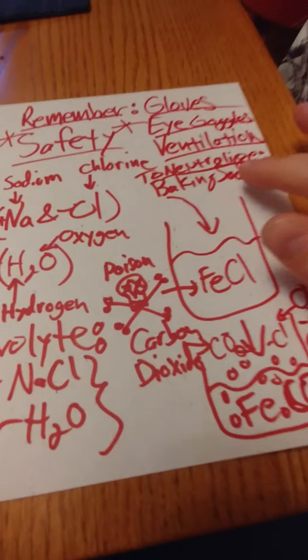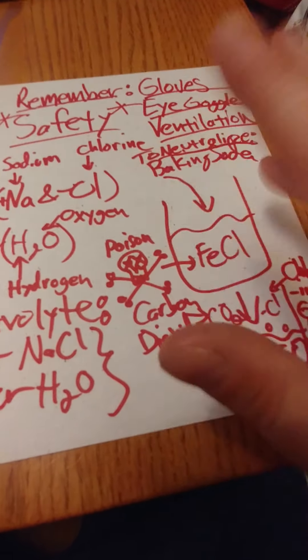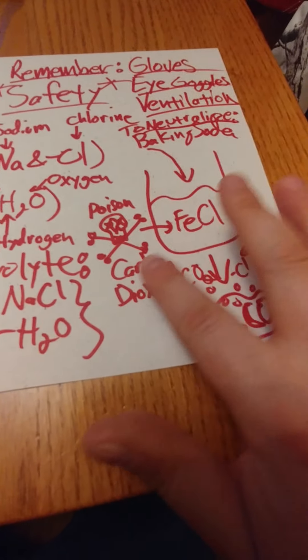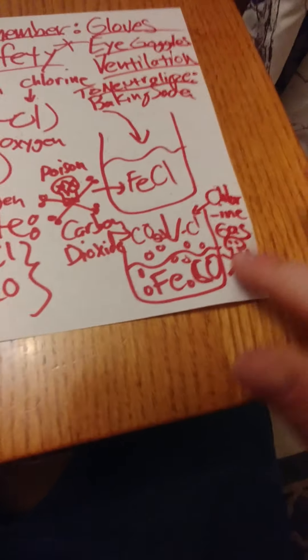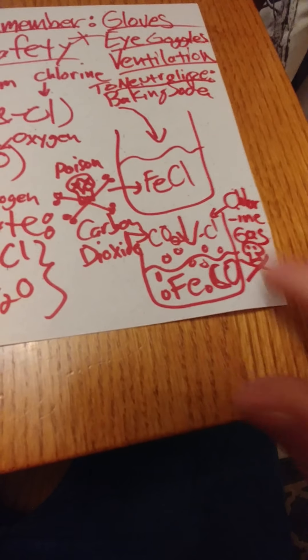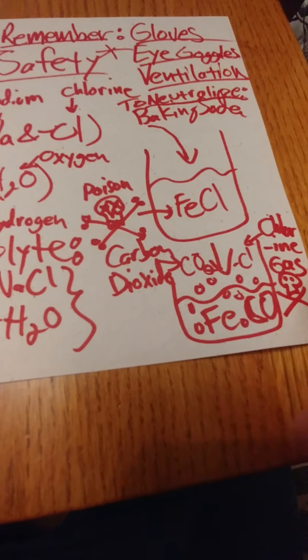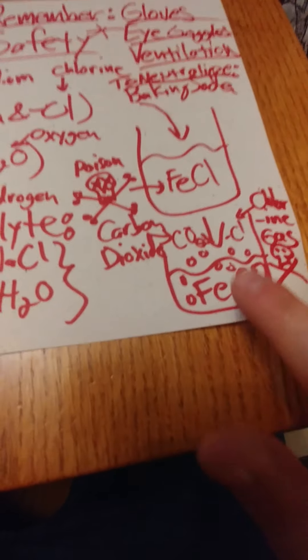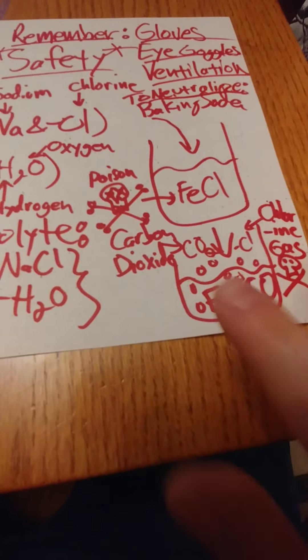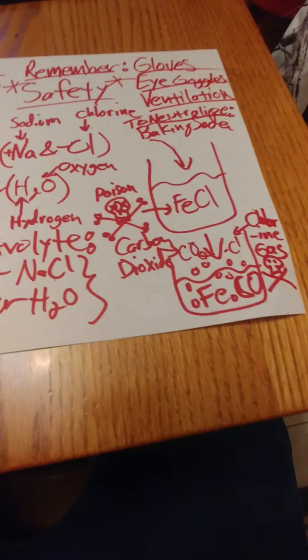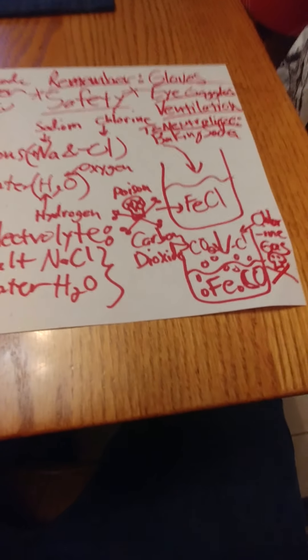And to neutralize it, we're going to use baking soda. So, we're going to pour baking soda in. It's going to bubble and fizz. And this is going to release carbon dioxide and chlorine gas, which we need to ventilate because chlorine gas is also poisonous or toxic. And we're going to be left with bubbly solution of iron carbonate. And iron carbonate is practically, well, it's relatively safe. It's not a toxic waste.